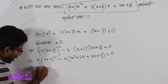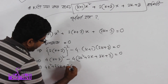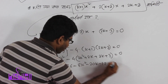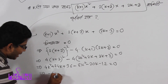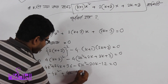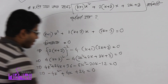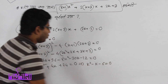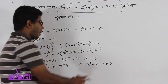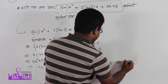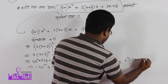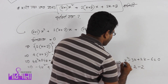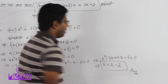Expanding: 4 into k squared plus 24k plus 36 minus 8k squared minus 20k minus 12 equal to 0, which gives minus 4k squared plus 4k plus 24 equal to 0. Dividing by minus 4: k squared minus k minus 6 equal to 0. Factoring by middle term: k squared minus 3k plus 2k minus 6 equal to 0, giving k values of 3 and minus 2.